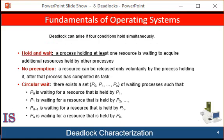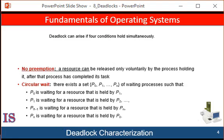Condition number two: hold and wait. A thread must be holding at least one resource and waiting to acquire additional resources that are currently being held by other threads. Thirdly, there is no preemption — that is, a resource can be released only voluntarily by the thread holding it after that thread has completed its task.